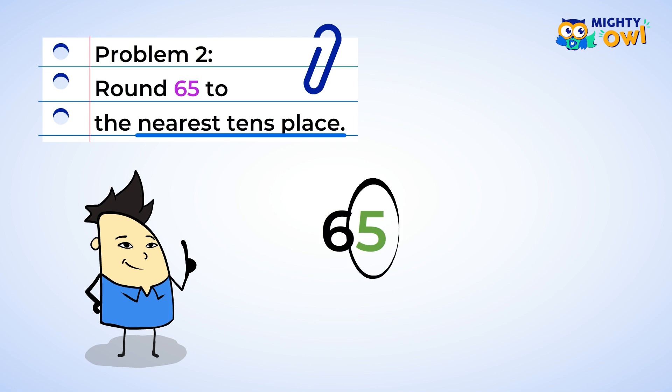the rule for a five in the ones place is to round up. So go ahead and add one to the tens place, to the six, and change it to a seven. This means that the answer is 70.